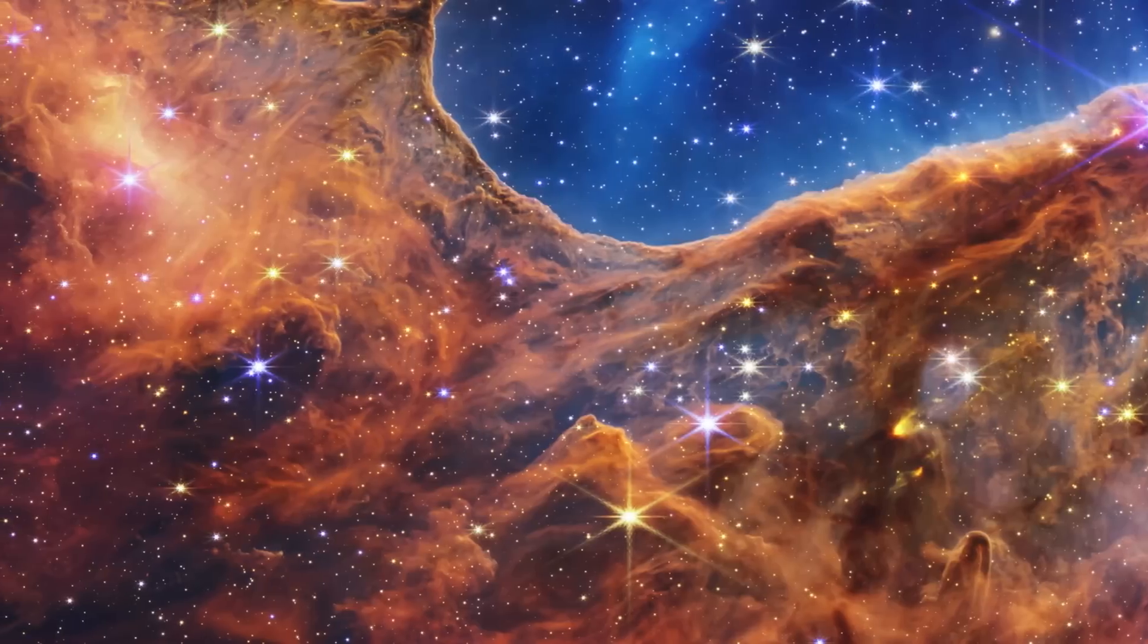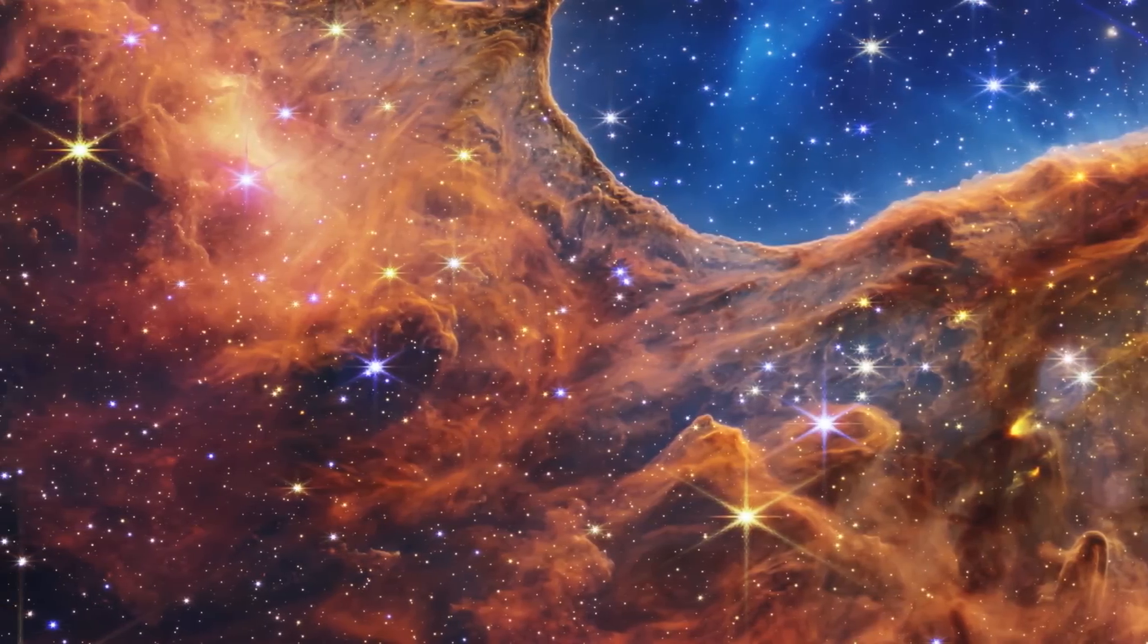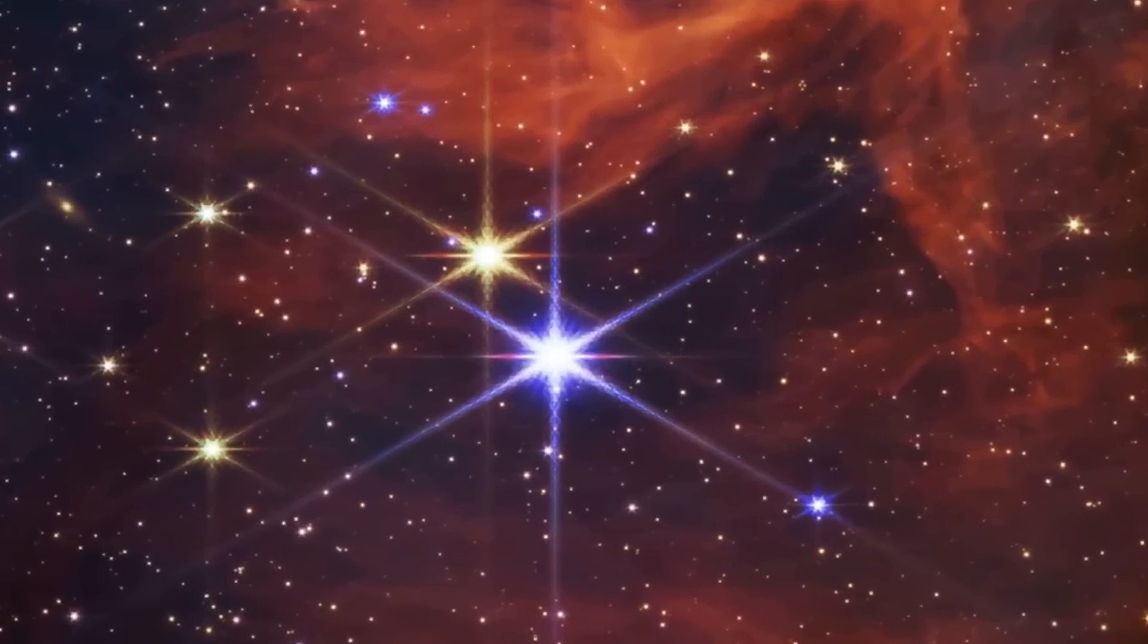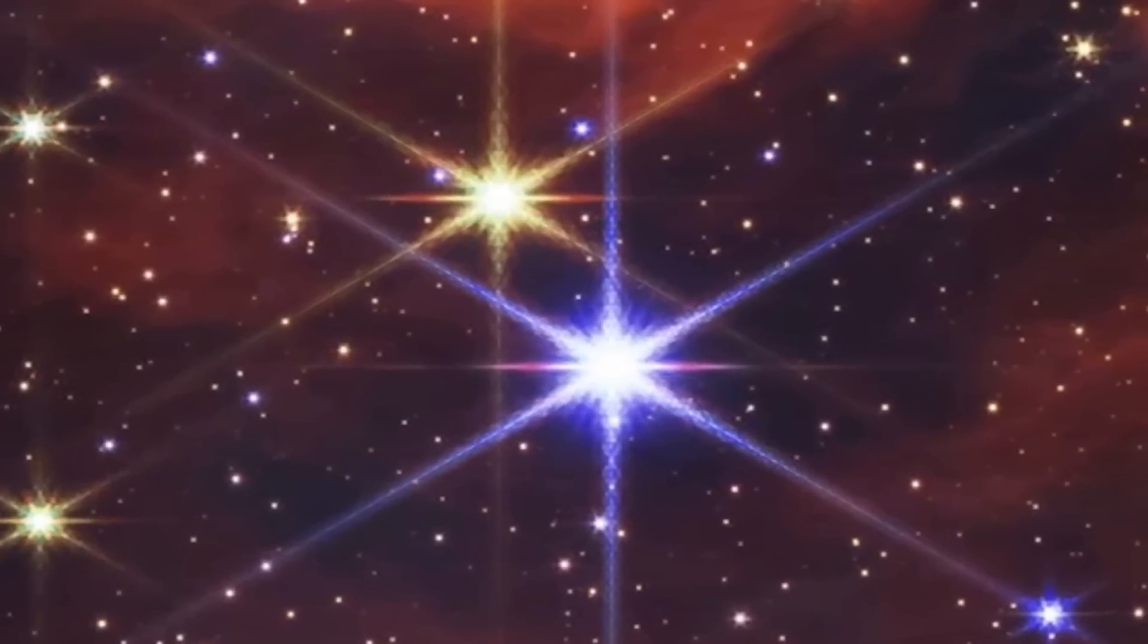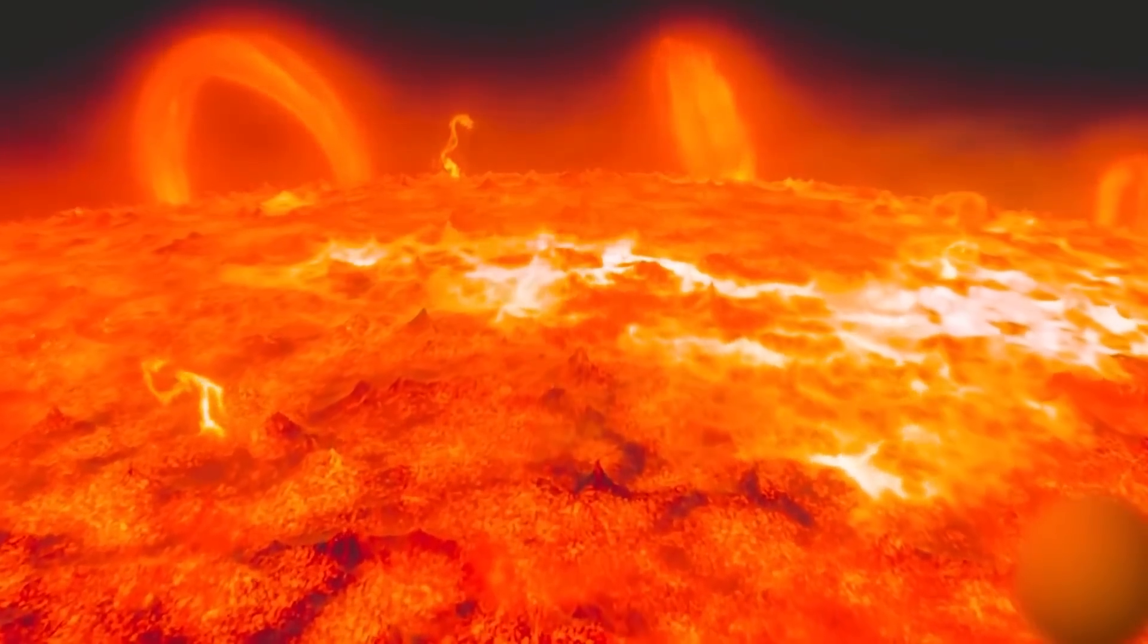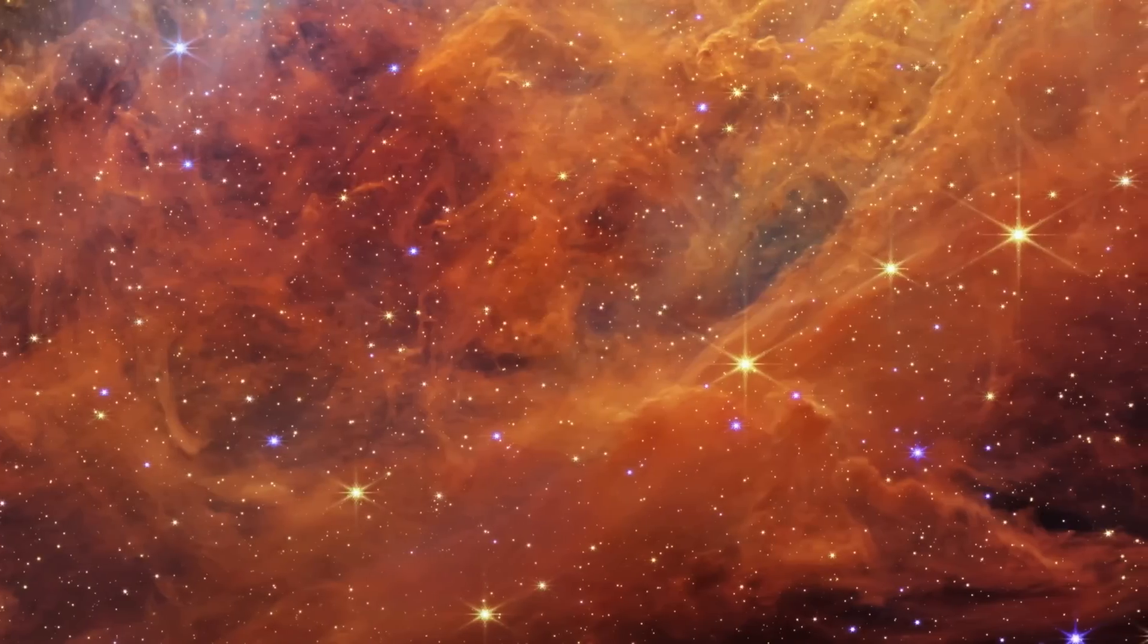However, unlike our stellar neighbor, hundreds and thousands of stars are at such distances. Some are located unbelievably close to each other. If our Sun was among these stars, then at night, it would be almost as bright as during the day, since there are too many stars around.